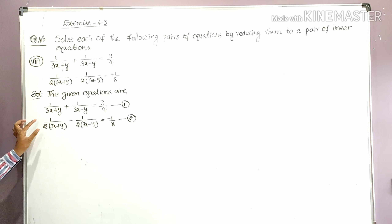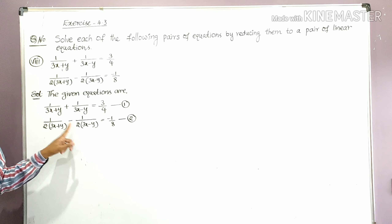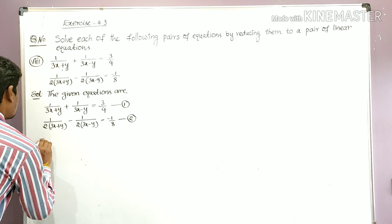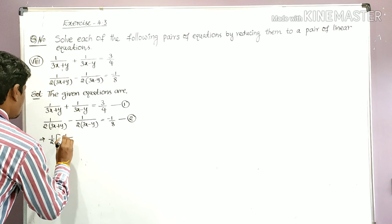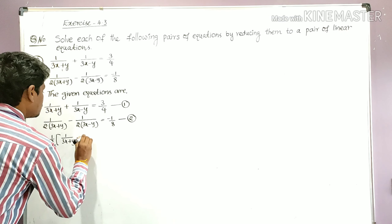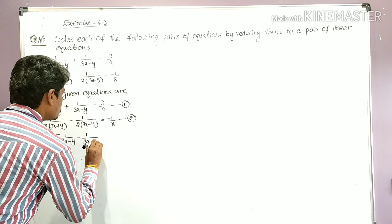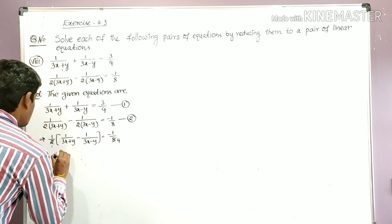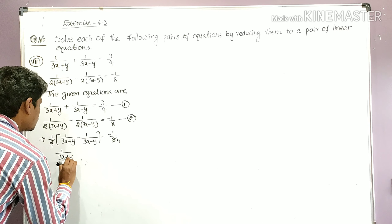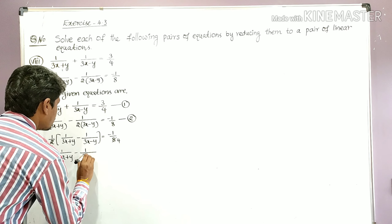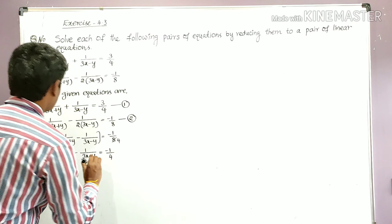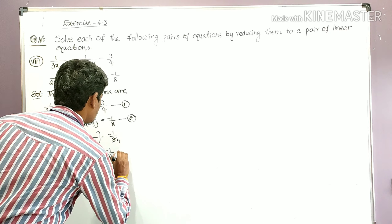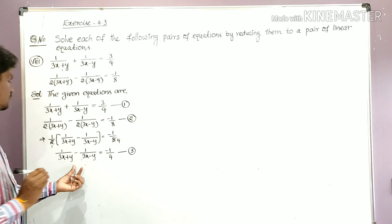From equation 2, we can take 1/2 as a common factor. Writing 1/2 as common gives us: 1/2 × [1/(3x + y) − 1/(3x − y)] = −1/8. Cancelling 2 on both sides — 2 ones and 2 fours — we get: 1/(3x + y) − 1/(3x − y) = −1/4. Let this be equation number 3.